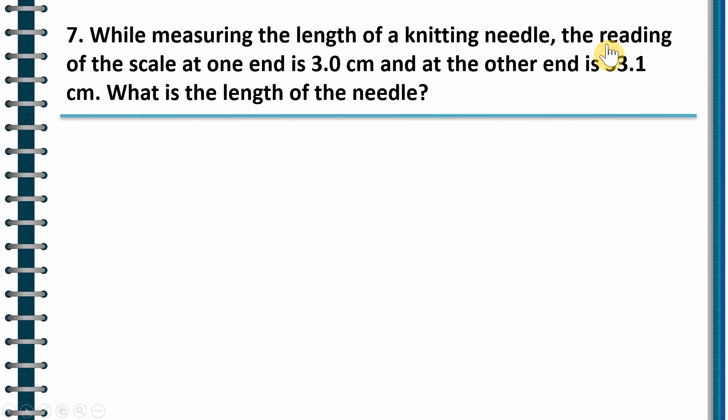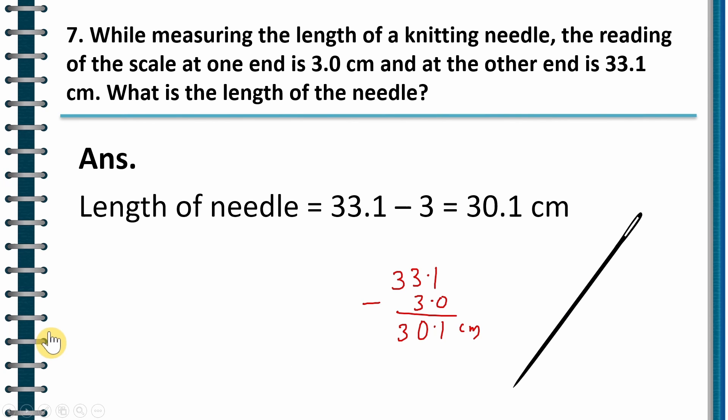Let us see next question. While measuring the length of the knitting needle, the reading of the scale at one end is 3.0 centimeter and at the other end, it is 33.1 centimeter. What is the length of the needle? Now, how do we do this? Very easy. What we do is we take 33.1 and subtract 3.0. And this will give me 30.1 centimeter. So the length should be 33.1 minus 3, which is 30.1 centimeter. Correct.